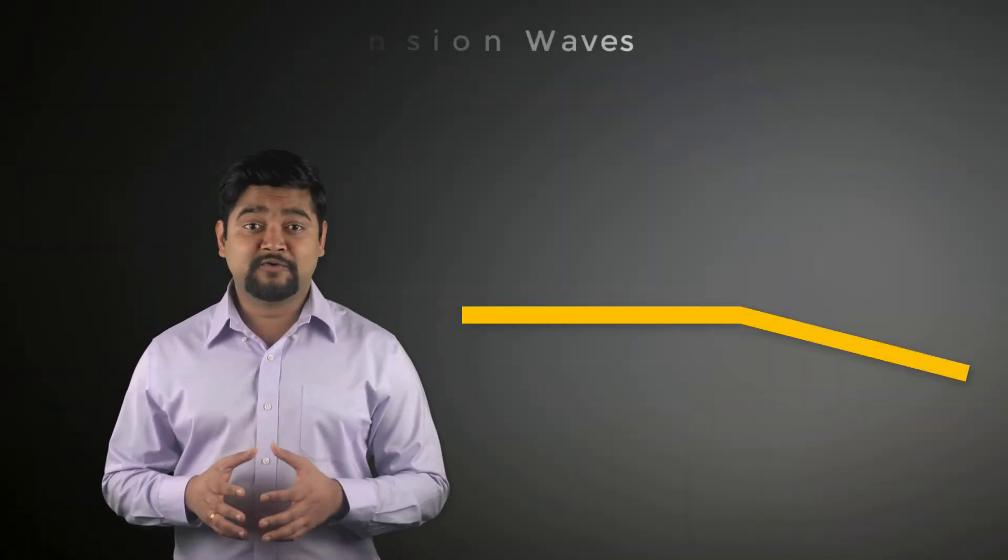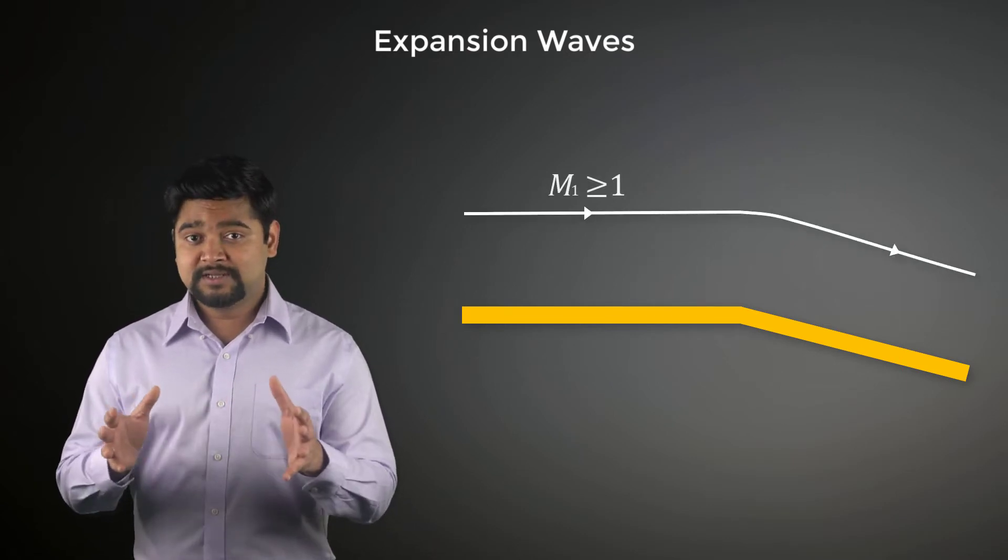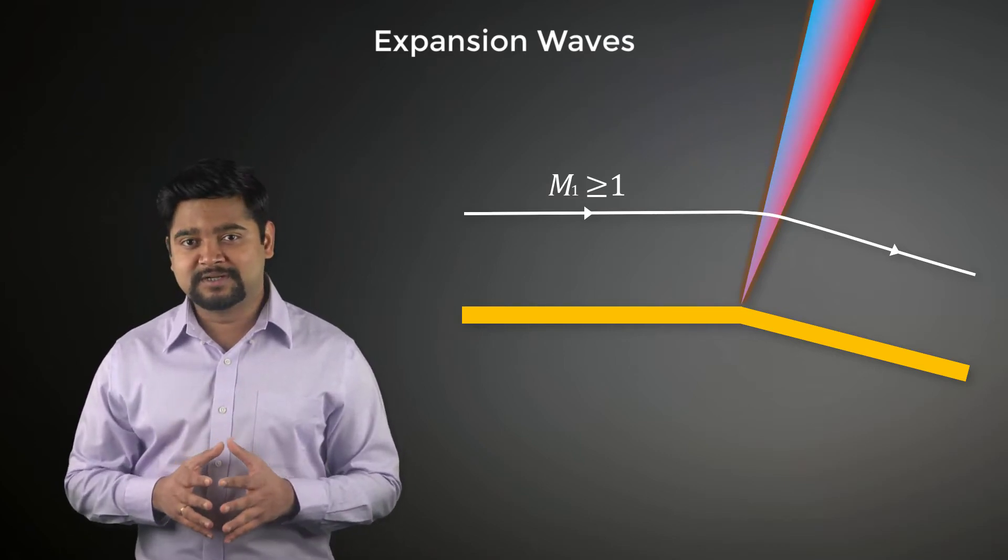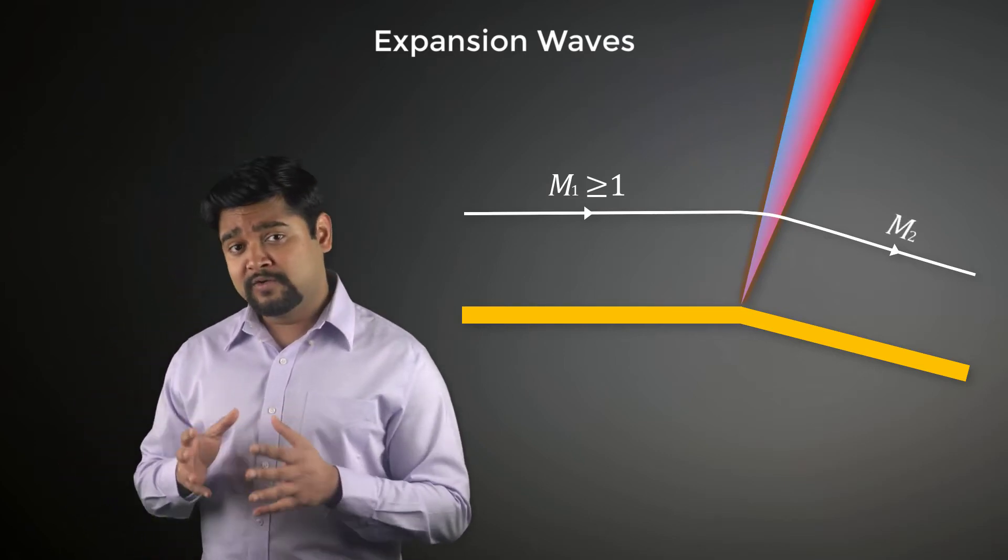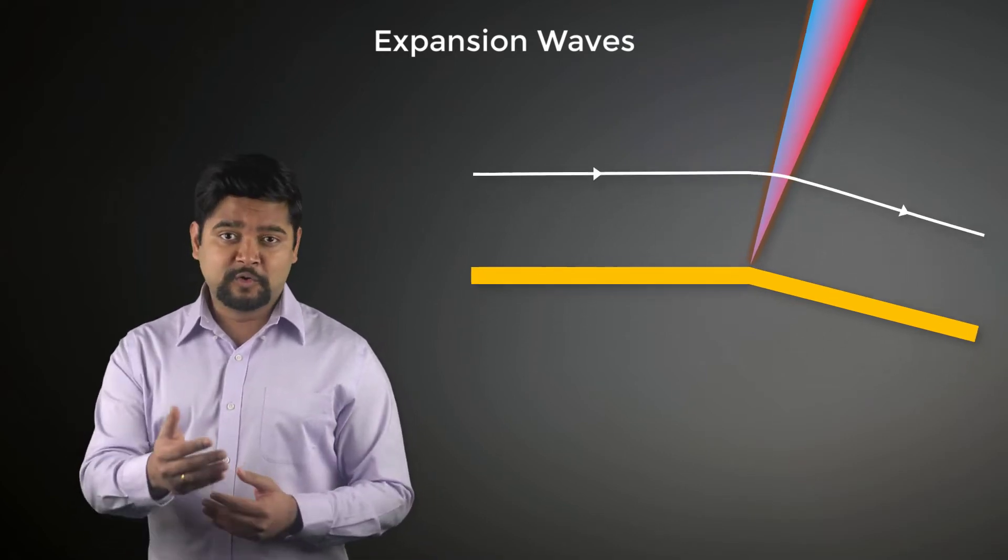Expansion waves are formed when a supersonic flow turns in such a way that it expands in the direction of the flow. This is exactly opposite of the situation in which the flow turns into itself leading to the formation of oblique shocks.